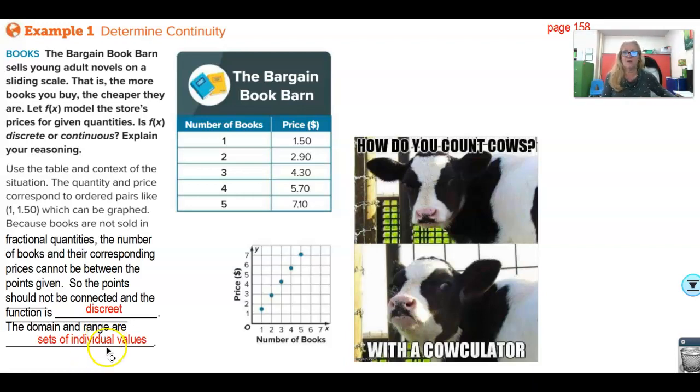Example one. Determine continuity. The bargain book barn sells young adult novels on a sliding scale. That is, the more books you buy, the cheaper they are. Let f(x) model the store's prices for given quantities. Is f(x) discrete or continuous? Explain your reasoning. They're saying you can't sell half a book. You can sell one book or two books, but there's no in between books. This is going to be a discrete graph, and you can tell that just by looking at this graph.